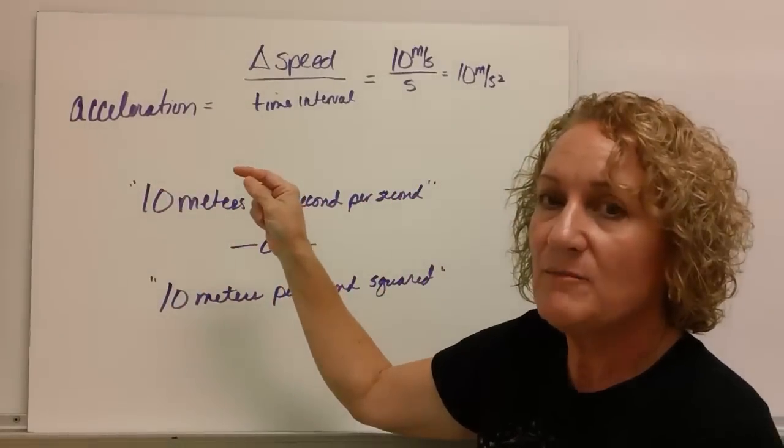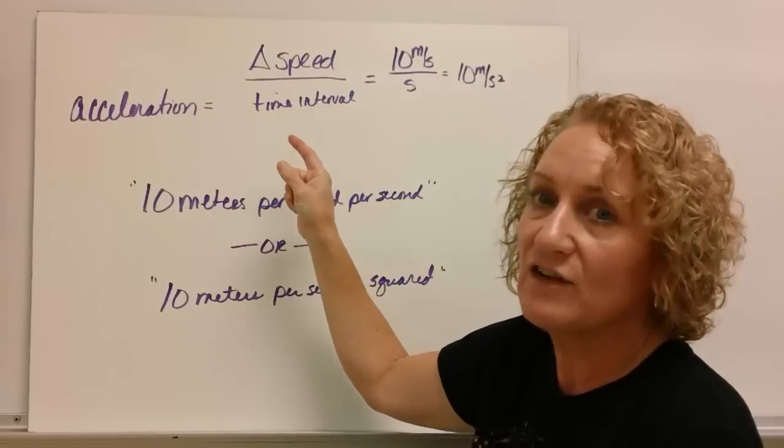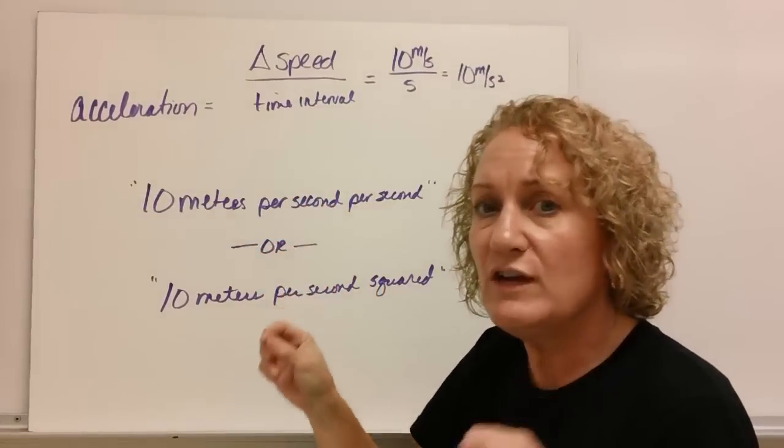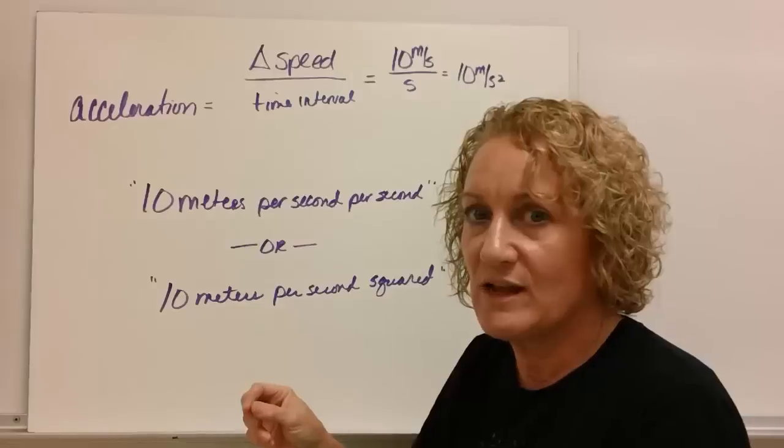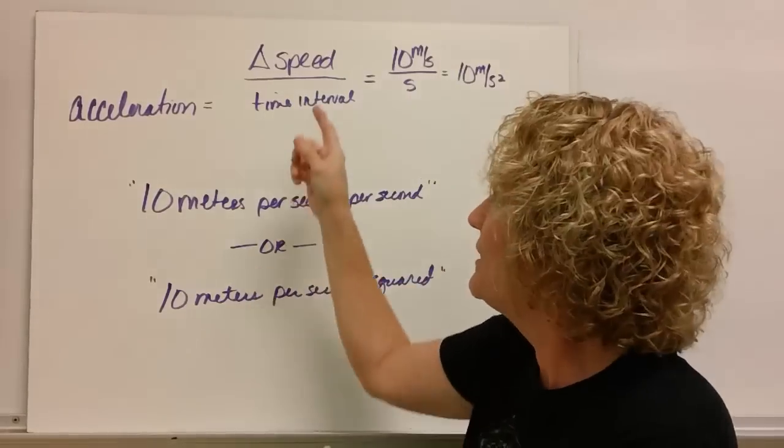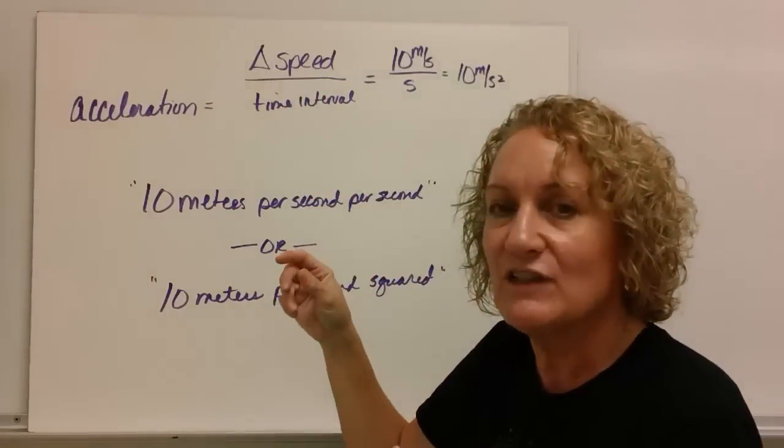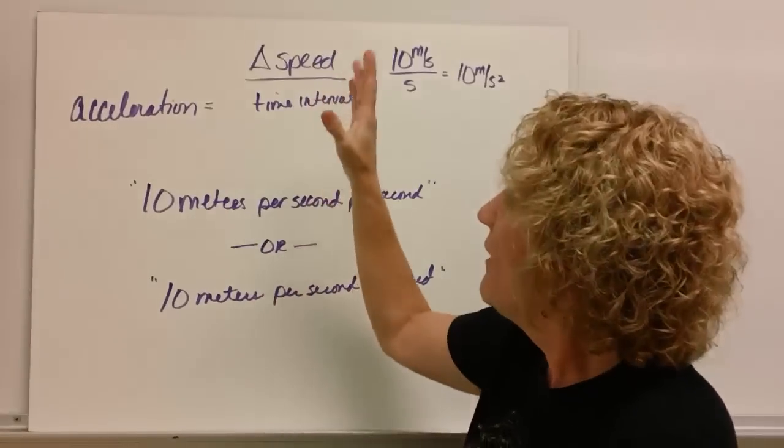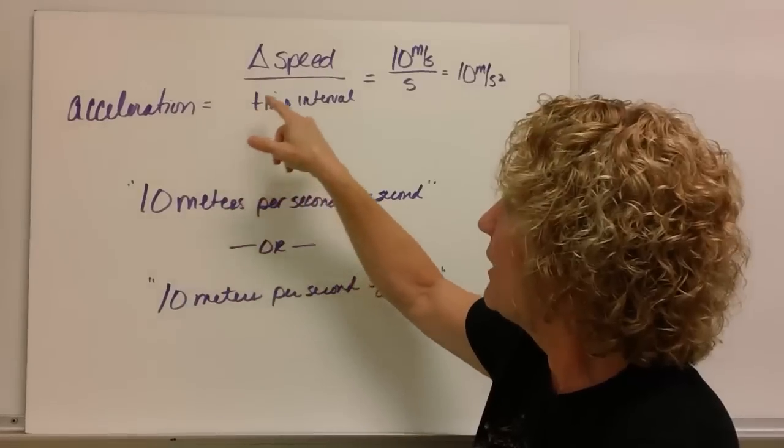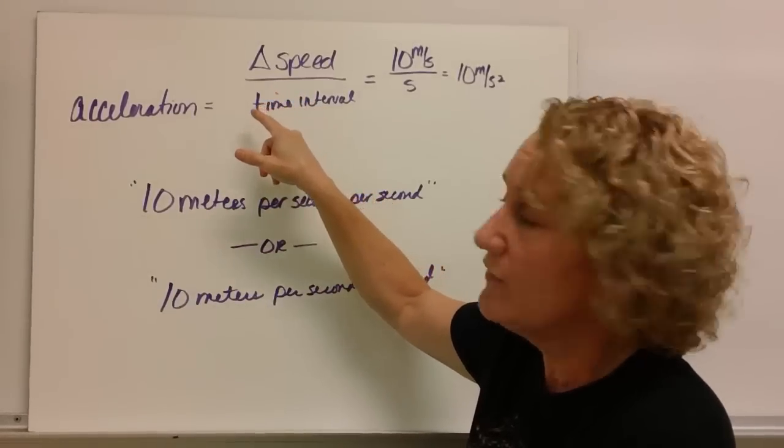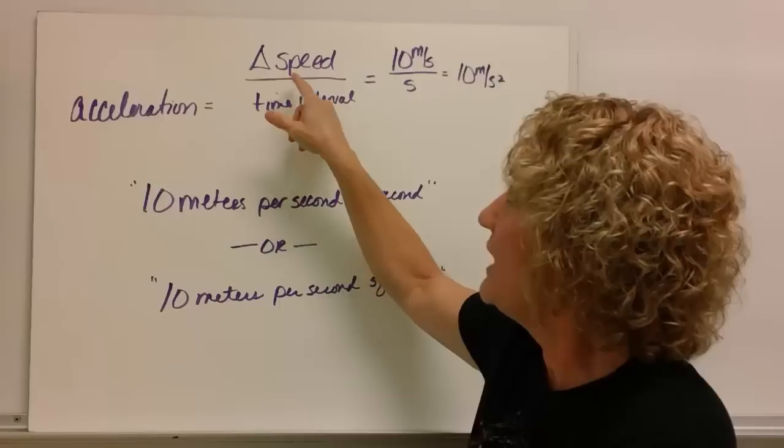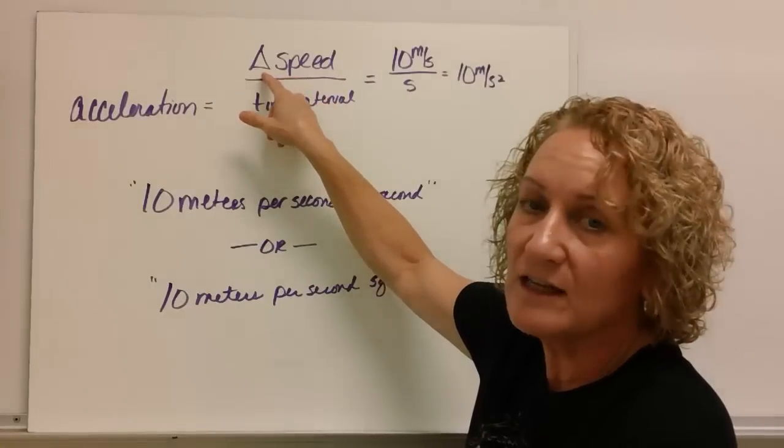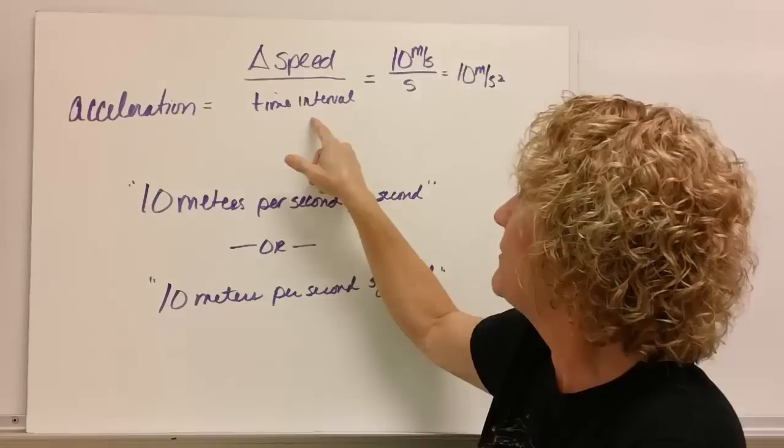Acceleration is mathematically defined as change in velocity over time interval. But with free fall, it's falling in a straight line. And if it's falling in a straight line, we can use the term speed instead of velocity. So for this example, and actually for all free fall, acceleration is change in speed. Remember that delta, that triangle, means change. Change in speed over the time interval.